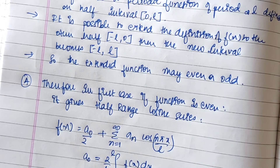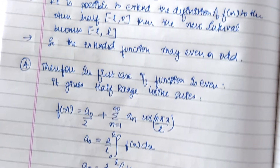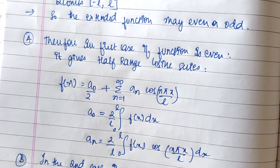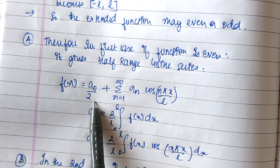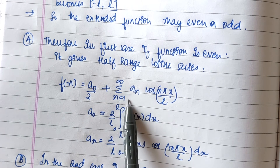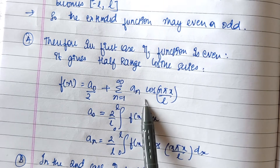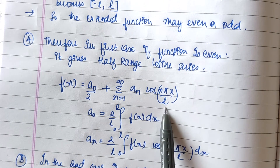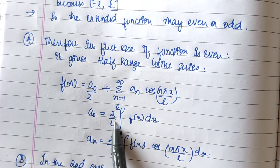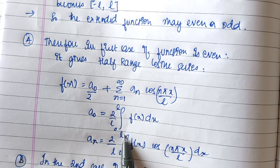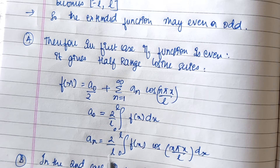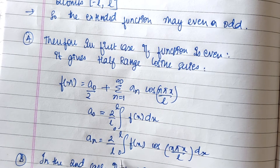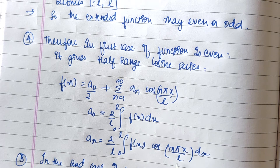In the first case, if the function is even, it gives us the half range cosine series, where f(x) is equal to a0 by 2 plus summation of n equals 1 to infinity of an cos(n pi x / L). Here a0 is equal to 2 by L times the definite integral from 0 to L of f(x) dx, and an is equal to 2 by L times the integral from 0 to L of f(x) cos(n pi x / L) dx.